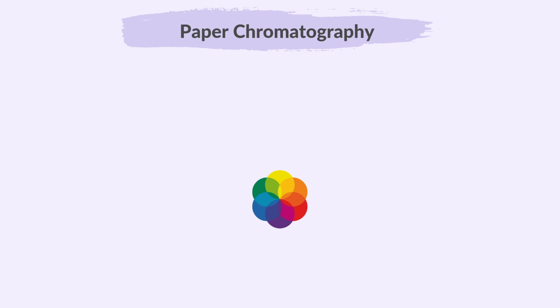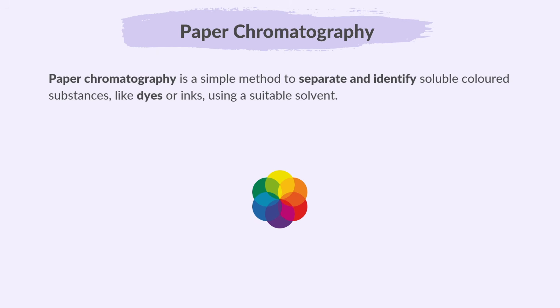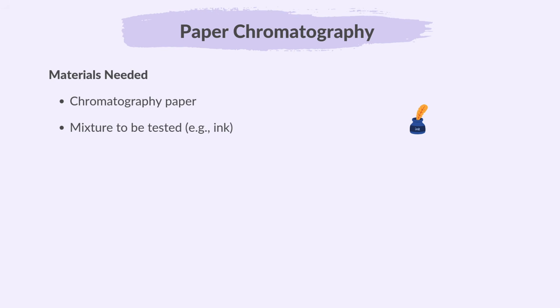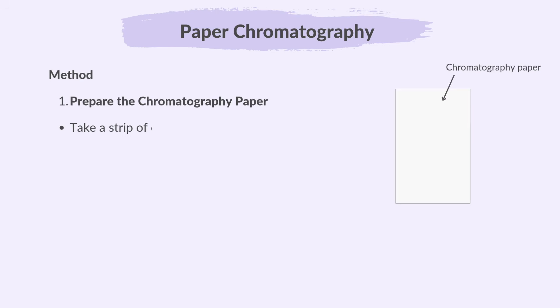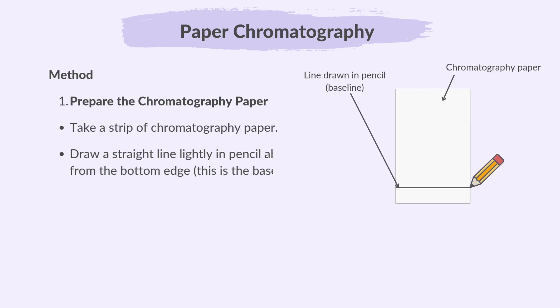Let's learn about paper chromatography. Paper chromatography is a simple method to separate and identify soluble coloured substances like dyes or inks using a suitable solvent. The steps are: take a strip of chromatography paper, draw a straight line lightly in pencil about 1-2 cm from the bottom edge. This is the baseline.